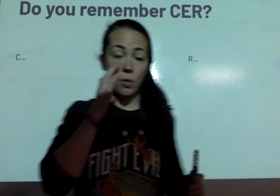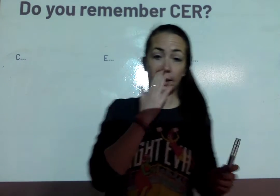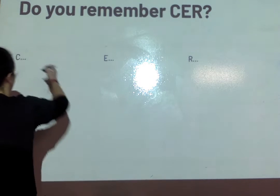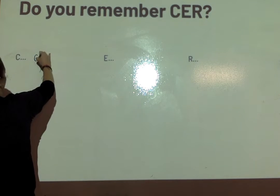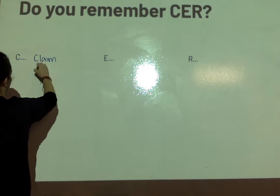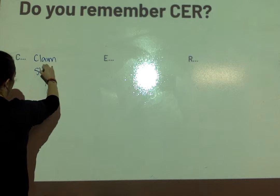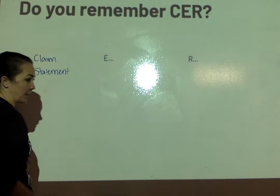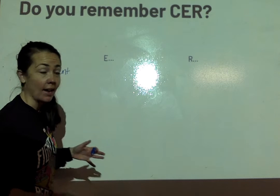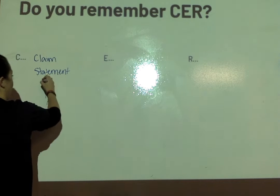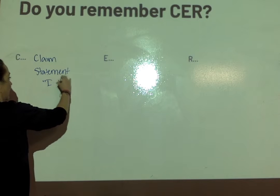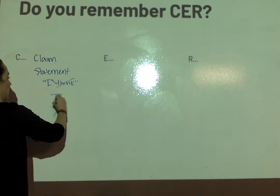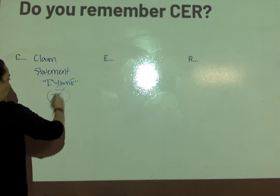Here is your reminder about what CER is. In CER, you have three parts to this paragraph. The C stands for a claim — a statement. It should not be an opinion; even if it is your opinion, you're going to state it like a fact. So you're not going to use things like 'I think' or 'I believe.' In fact, you're not going to use the word 'I' at all.